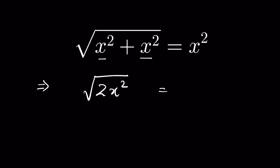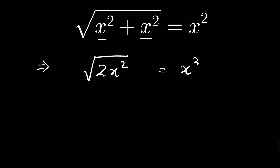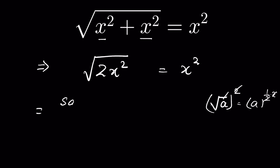Now, to remove the square root, we square both sides. When a is under a square root, it means a is raised to the power of 1/2. When we square it, the powers multiply by 2, and the 2s cancel, removing the square root. So we square both sides.